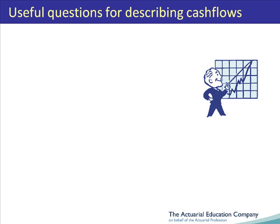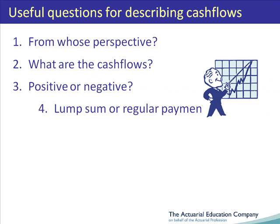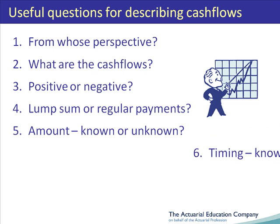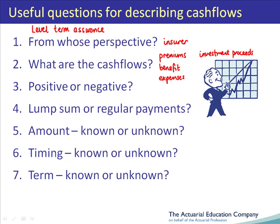Here are the questions. We'll demonstrate the technique by looking at a simple financial product: a level term assurance. Question 1: we'll consider the term assurance from the insurer's perspective. Question 2: the main cash flows are the premiums, the benefit, the expenses, and investment proceeds. We now need to iterate around questions 3 to 7 for each of the cash flows identified in question 2.